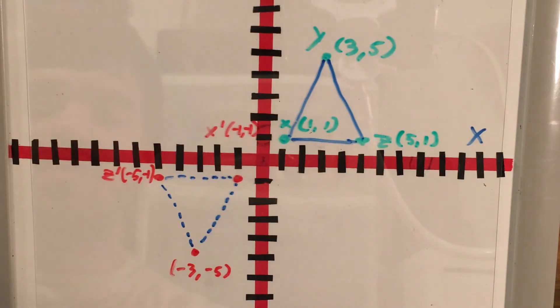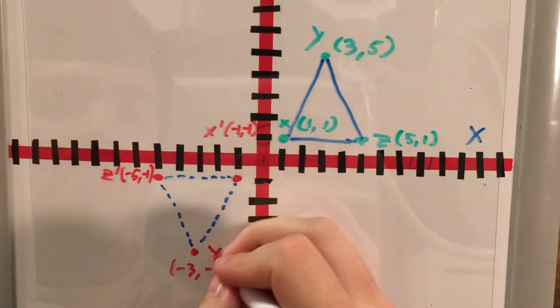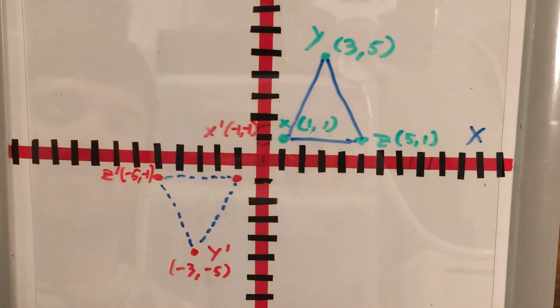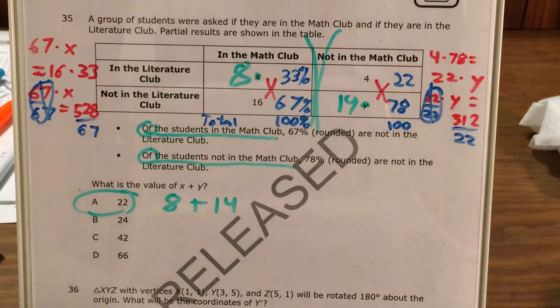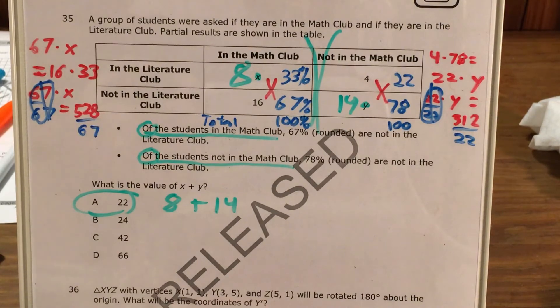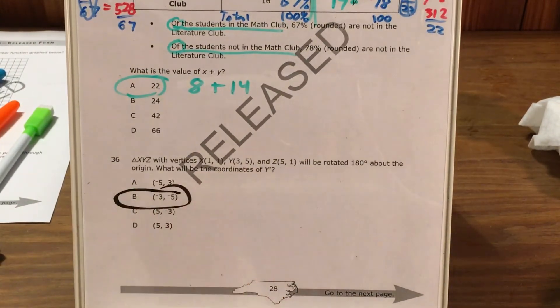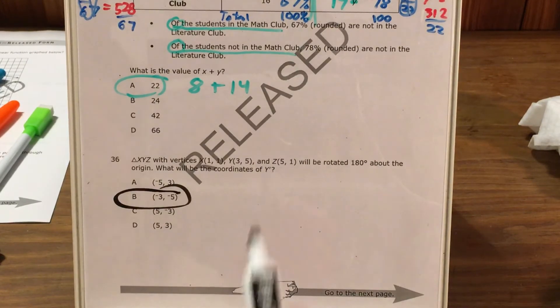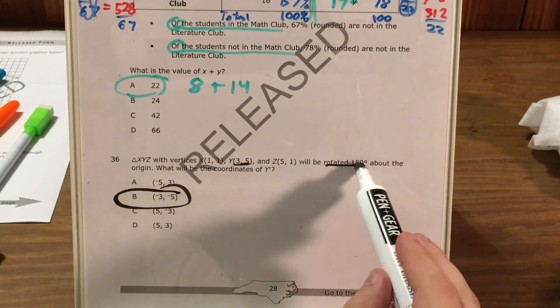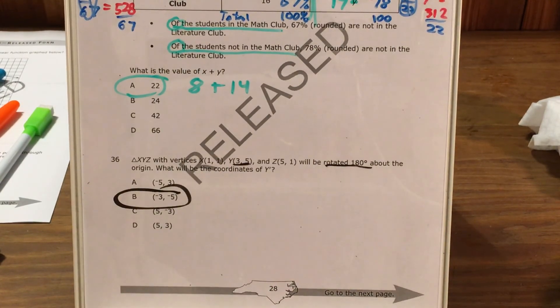Now, since I now know the coordinates of my new Y, also known as Y prime, (-3,-5), I'm going to look for that in my answer choices. And what do you know? It's, oops, let me scoot that up. That's choice B. X of -3, Y of -5. We just took our X and Y's and made them negative. That is the standard way that we rotate 180 degrees.